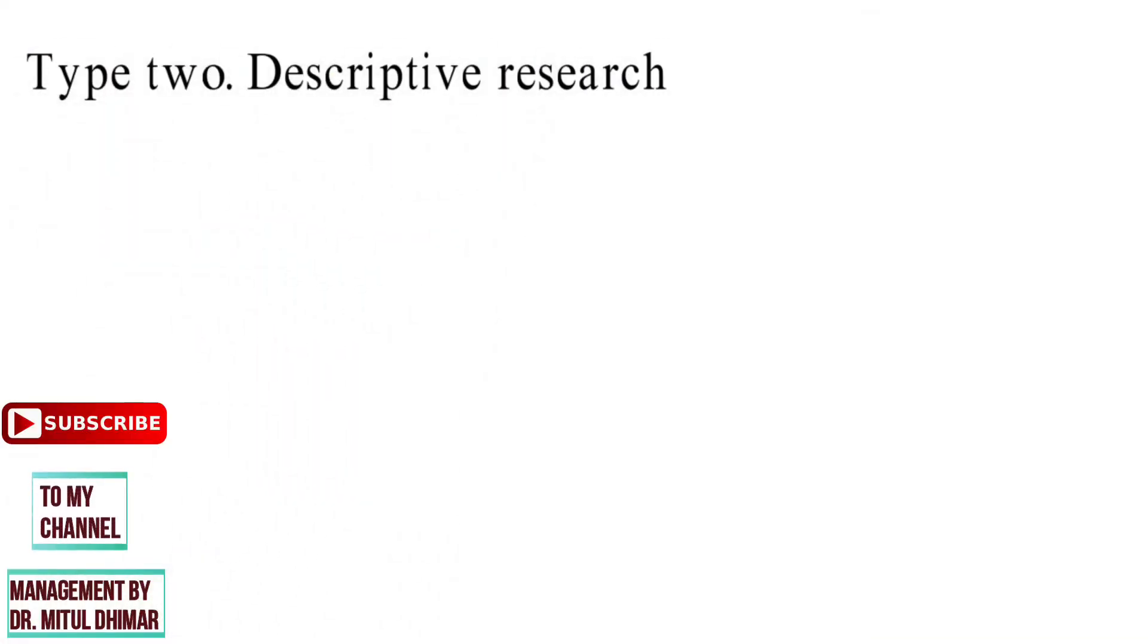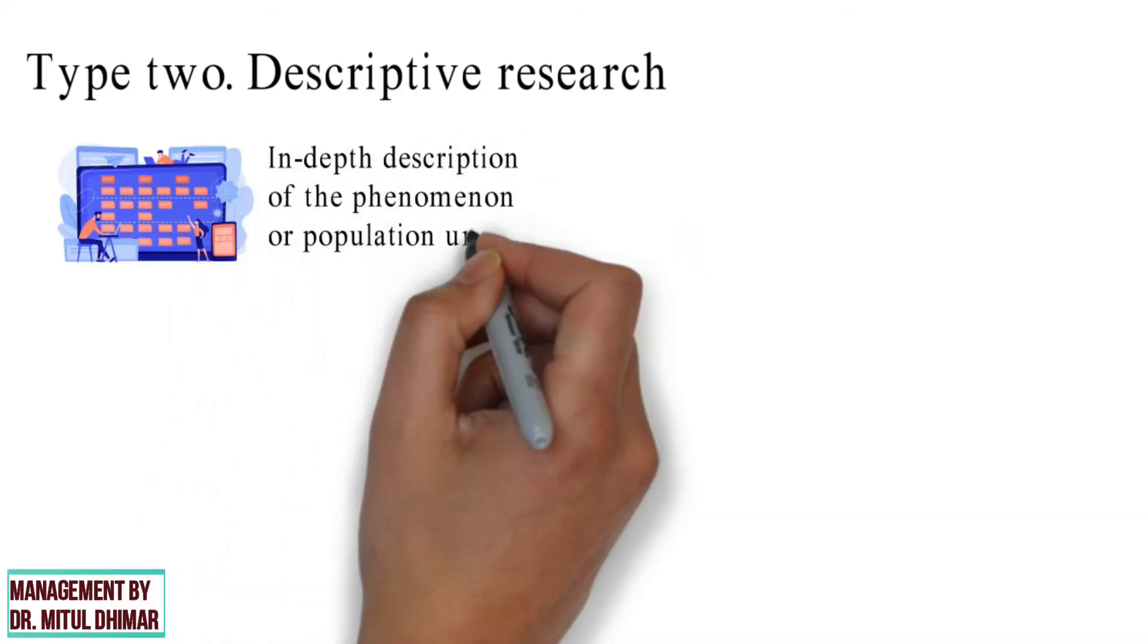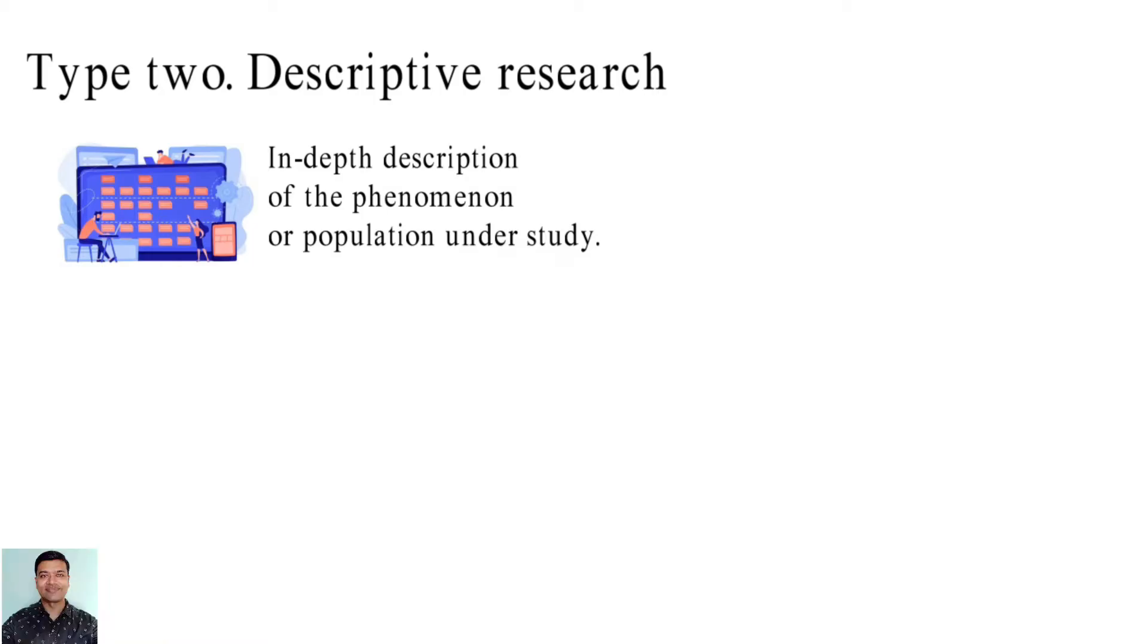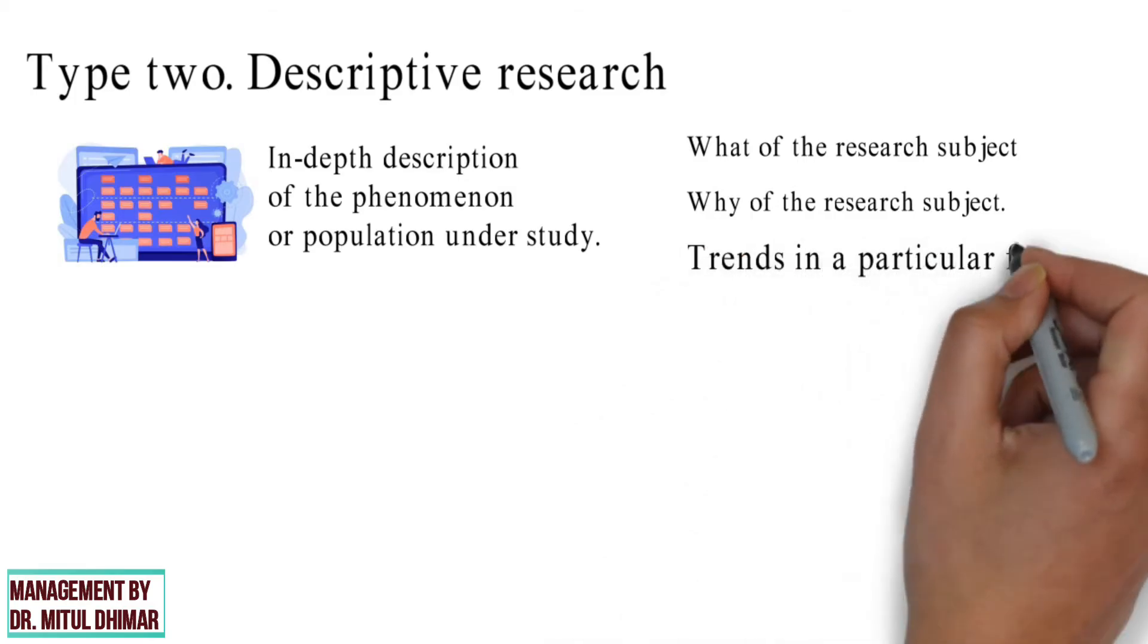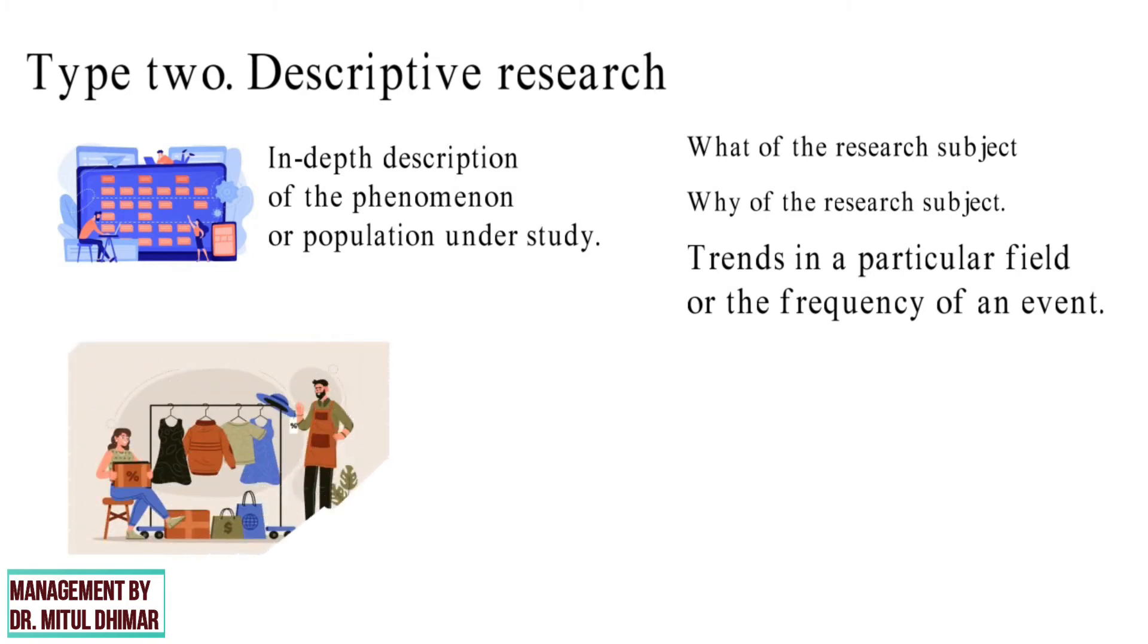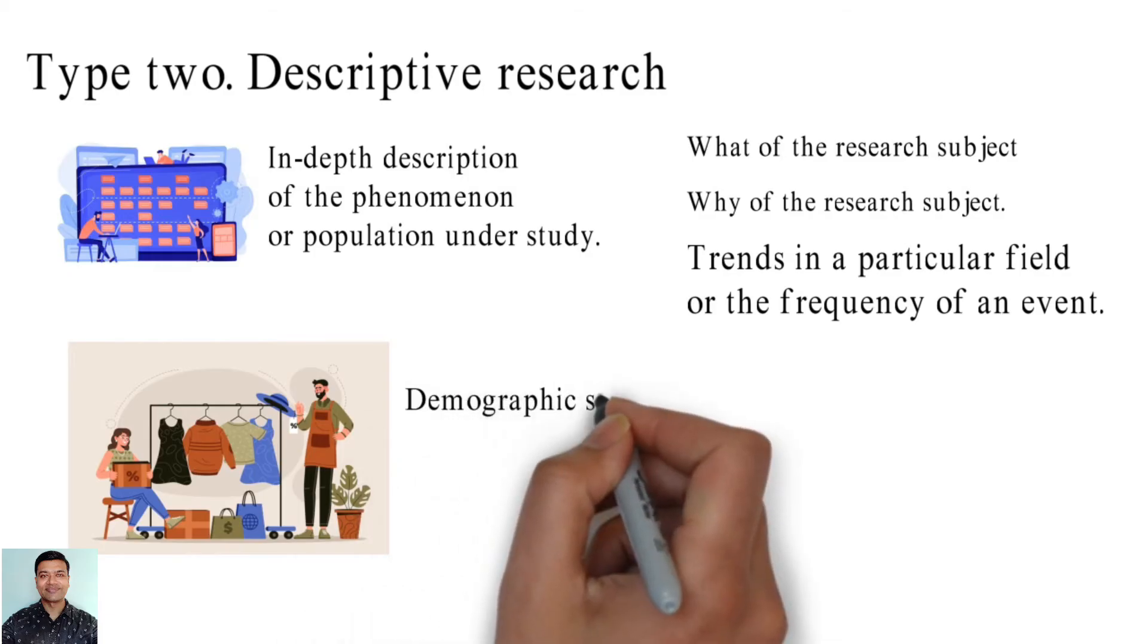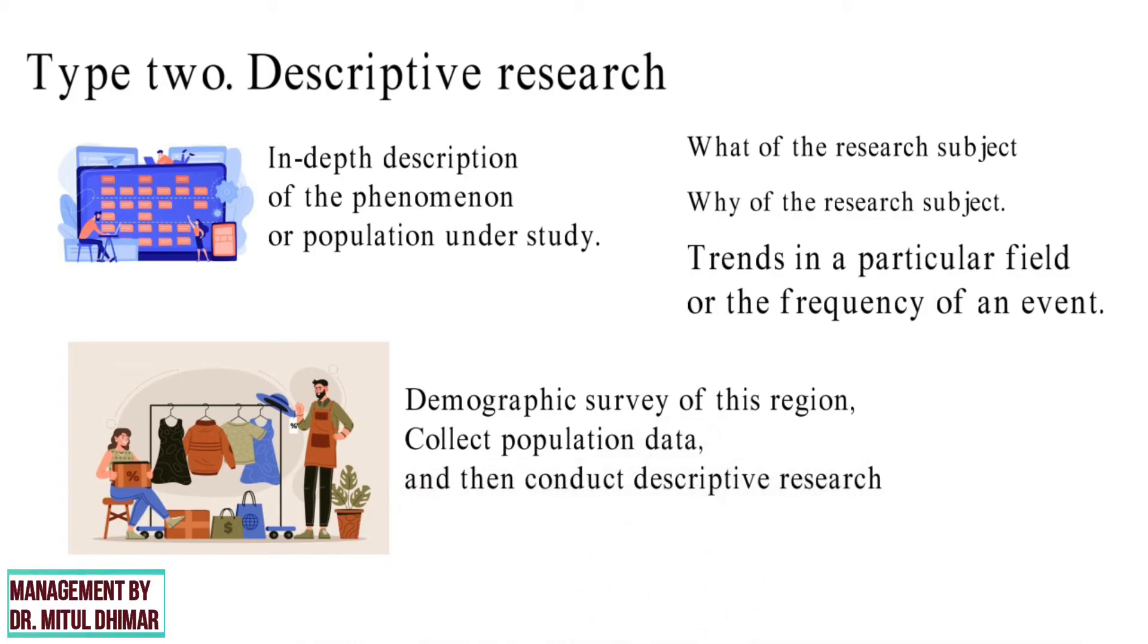Type 2. Descriptive research. Descriptive research is a type of research that provides an in-depth description of the phenomenon or population under study. This methodology focuses more on the what of the research subject than the why of the research subject. Descriptive research is a good option if you want to know the trends in a particular field or the frequency of an event. For example, a clothing brand that wants to understand fashion trend among Indian shoppers will conduct a demographic survey of this region, collect population data and then conduct descriptive research on this demographic segment.